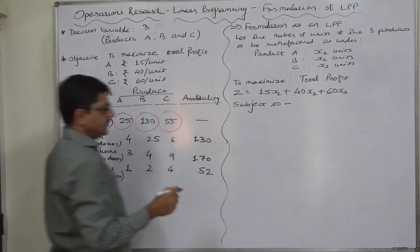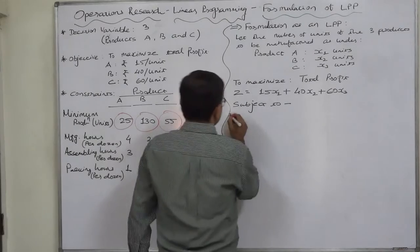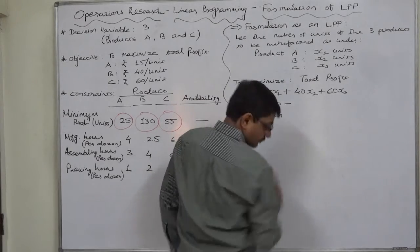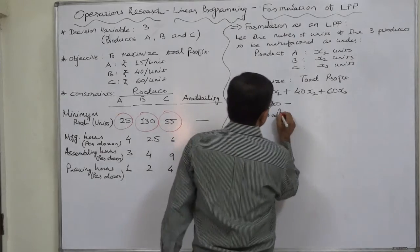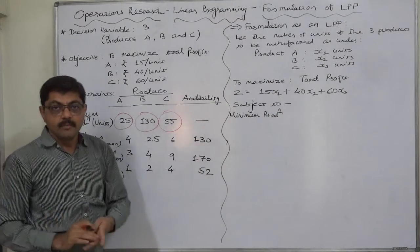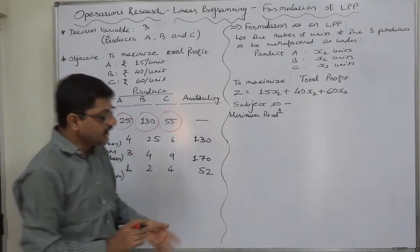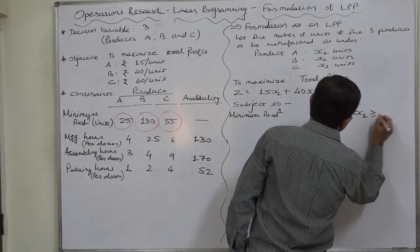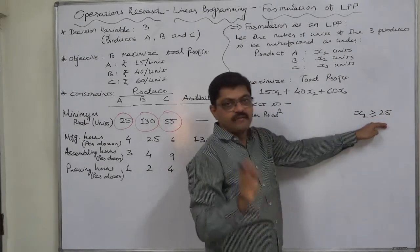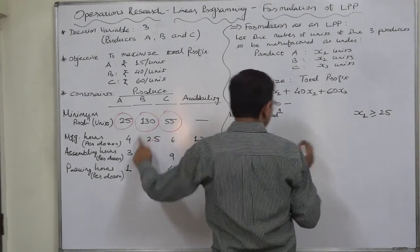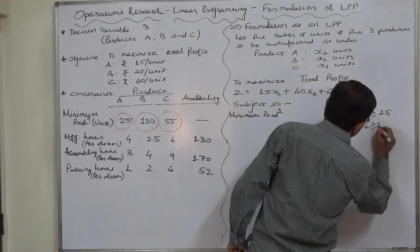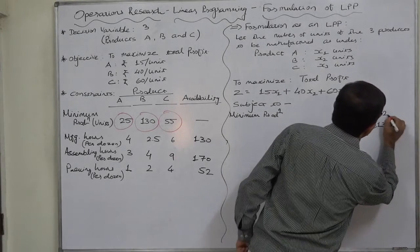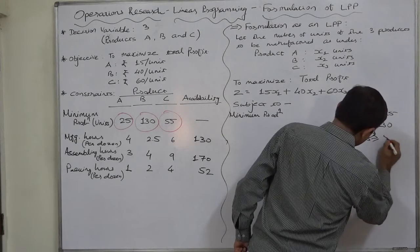Subject to the following constraints. The first three constraints are on minimum production quantity. Keep the word 'minimum' in mind — this much production must be there. Minimum production of A is 25 units, so X1 ≥ 25. At least 25 units must be manufactured. Similarly, for B it is 130, so X2 ≥ 130. And for C it is 55, so X3 ≥ 55.